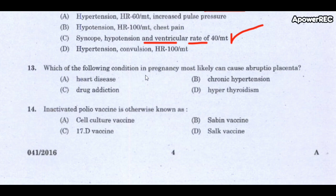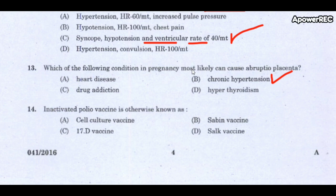Next question: which condition in pregnancy most likely causes abruptio placenta? The correct answer is chronic hypertension. Abruptio placenta is the premature separation of the placenta after the 20th week of gestation until the second stage of labor.